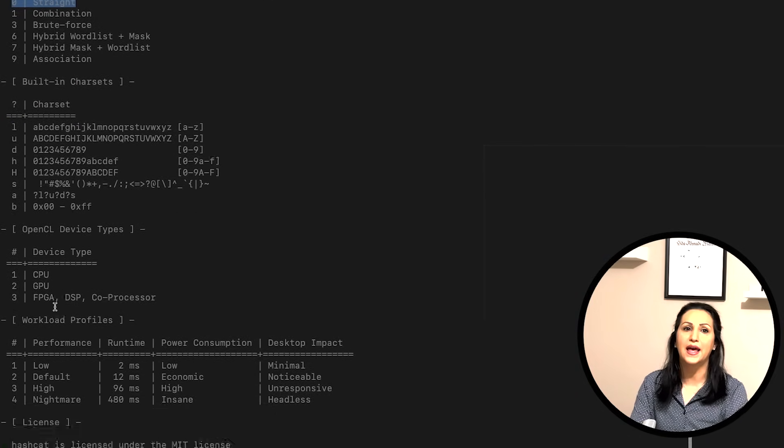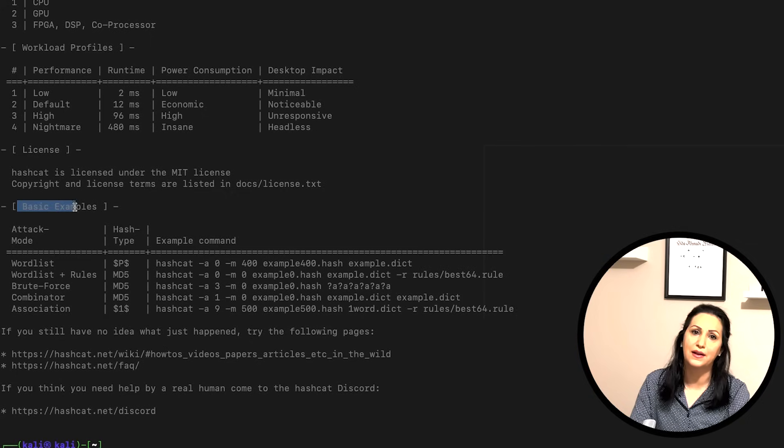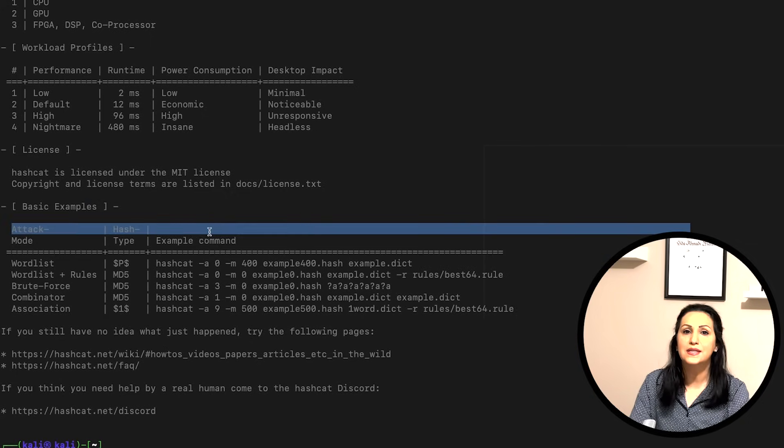At the end of the help output, there are some basic examples for using Hashcat. If you need detailed information of each option, you can go to the Hashcat manual page. We skip it here as it is not in our scope for this video.